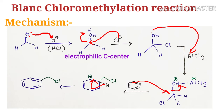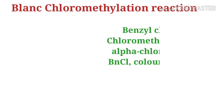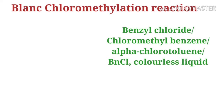This electrophile is then attacked by the aromatic pi electrons, followed by aromatization of the aromatic ring, and we get the final product — that is benzyl chloride, also known as alpha-chlorotoluene or chloromethyl benzene. This is a colorless liquid.